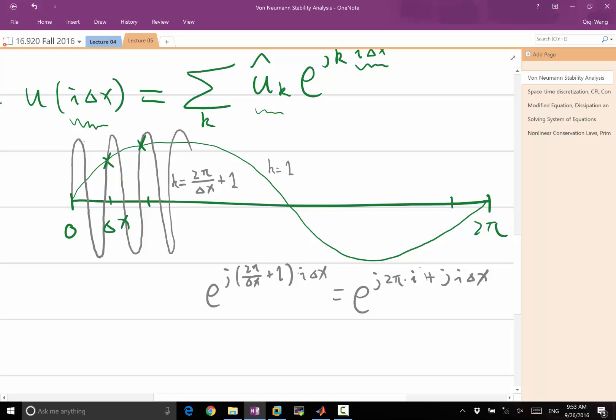And the first term, I can write this as the exponential summation equals the product of exponentials. And the first part is always equal to what? One, right?